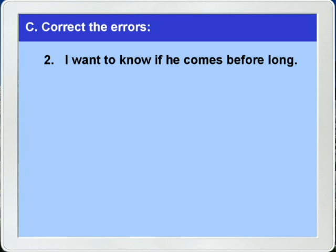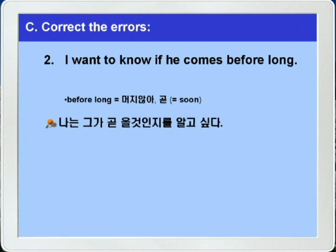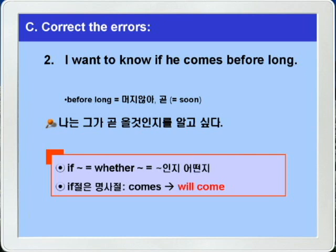2번, I want to know if it comes before long. Before long은 머지않아, 곧 이런 의미입니다. 해석하면 나는 그가 곧 올 것인지를 알고 싶다가 됩니다. 여기 if는 만약이라는 조건의 뜻이 아니라 뭐뭐인지 어떤지의 뜻으로 whether의 뜻이 되겠습니다. 명사절에서는 미래의 의미일 때 미래 시제를 써줘야 되니까, comes를 will come으로 고치는 것이 정답이 되겠습니다.